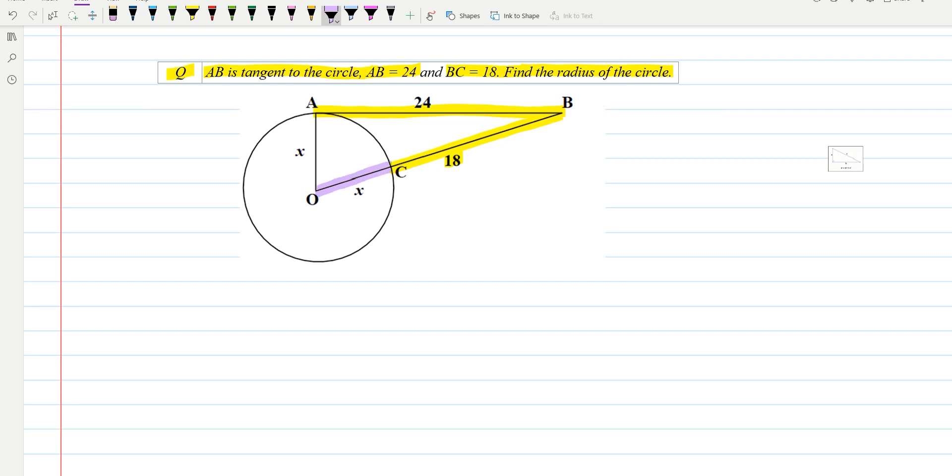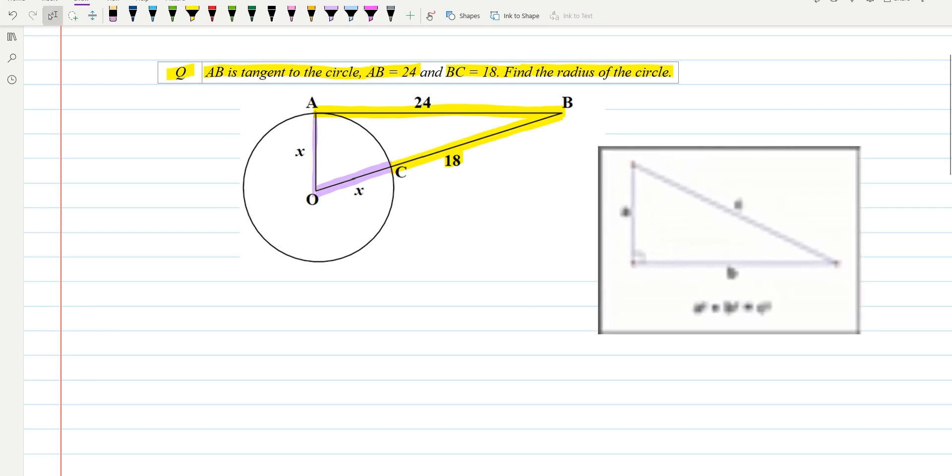We will be using Pythagoras theorem. What is Pythagoras theorem? This one which I have copied for you: a² (perpendicular) plus b² (base) equals c² (hypotenuse). So this is the Pythagorean theorem which we will be applying.